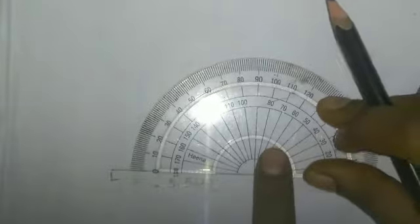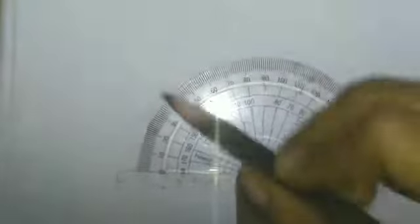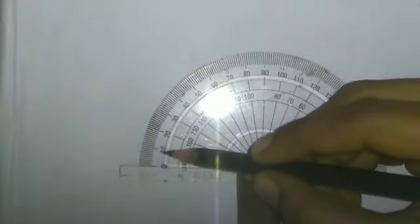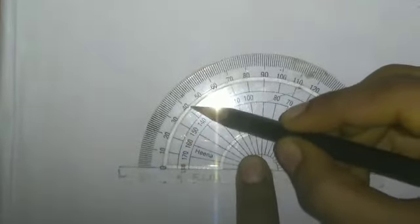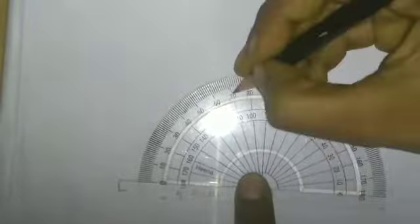Angle M equal to 70 degree. So, take 70 degree. Here, 0, 10, 20, 30, 40, 50, 60, 70.